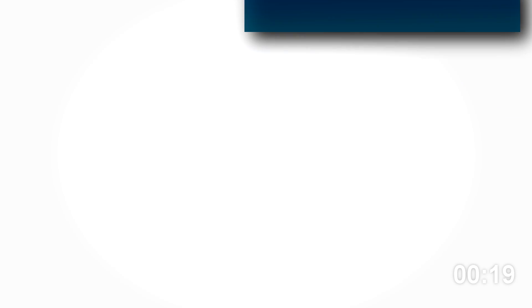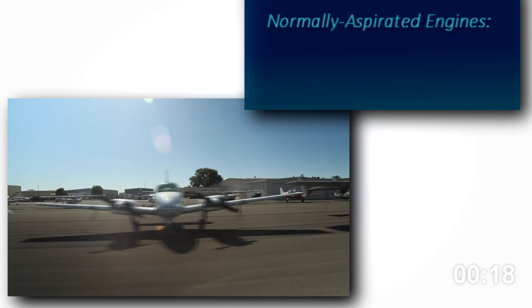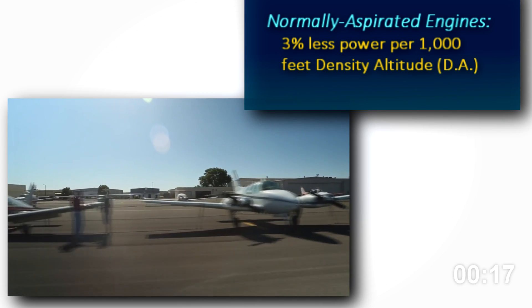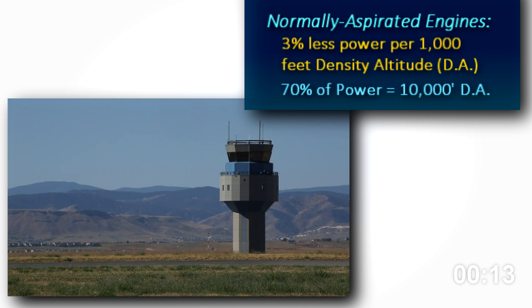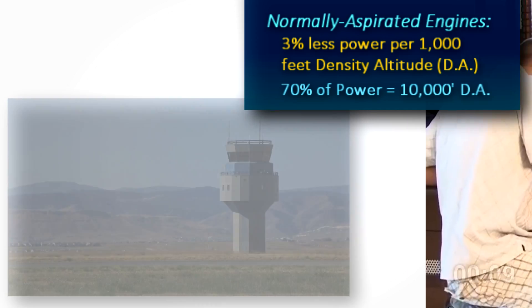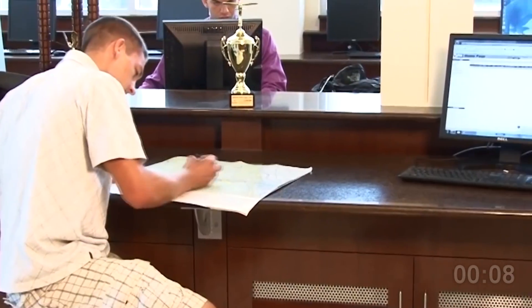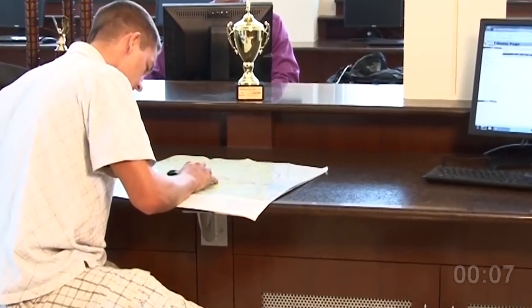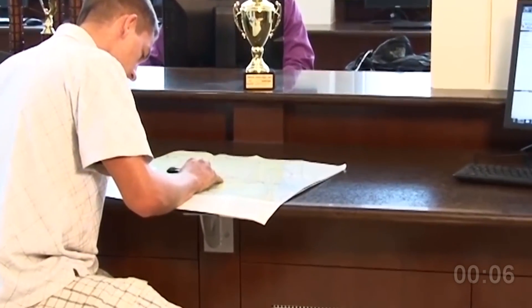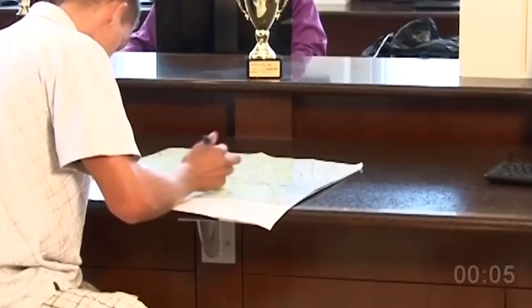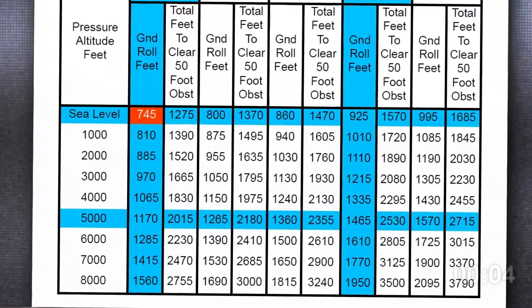Normally aspirated engines develop 3% less power for each 1,000 feet of density altitude gained. That translates to 70% power at 10,000 feet density altitude. Taking off at 70%? How much more runway will that take?